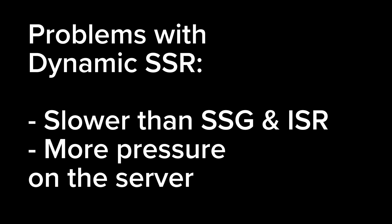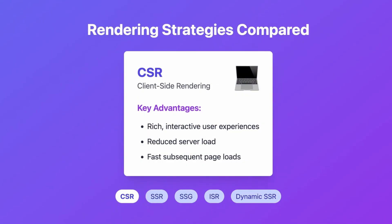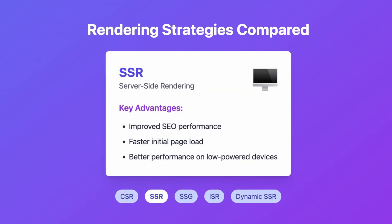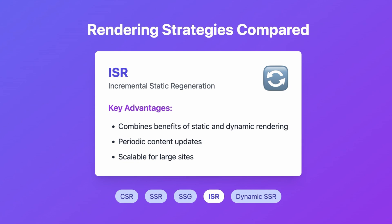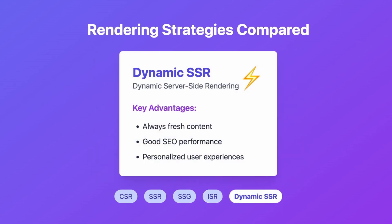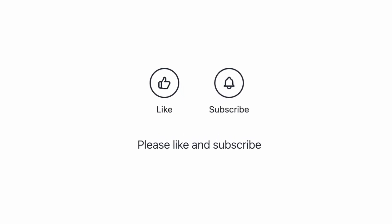The most important thing is that you cannot choose one method as the best — it entirely depends on your use case. For a highly interactive dynamic web application, client-side rendering is best. For better SEO and faster initial load, go with server-side rendering. For the combined benefits of SSR with the efficiency of static content, use SSG. For content that needs periodic updates without a full rebuild, use ISR. And for pages that must be rendered fresh on every single request, use dynamic server-side rendering.